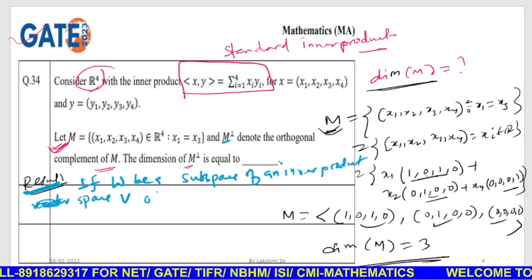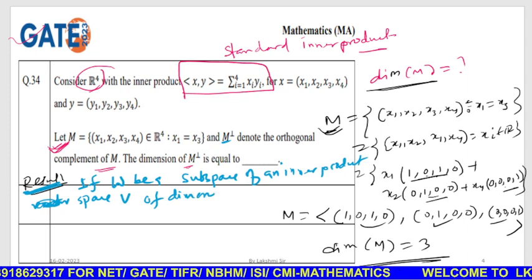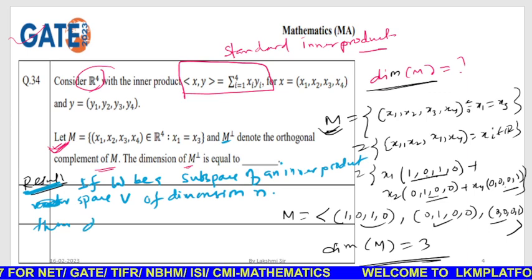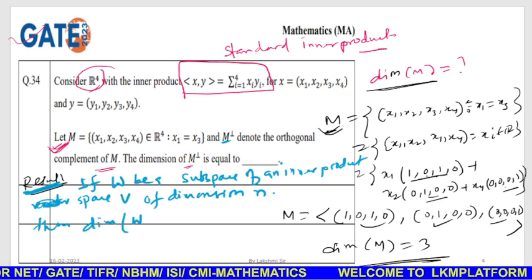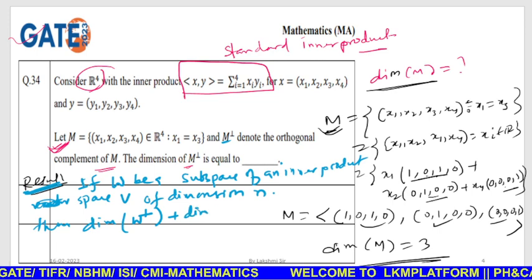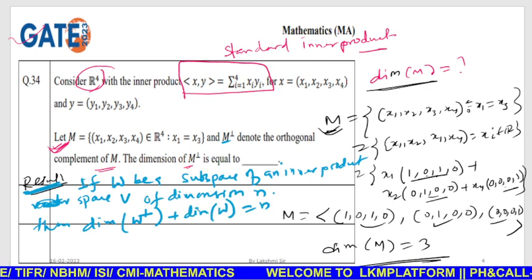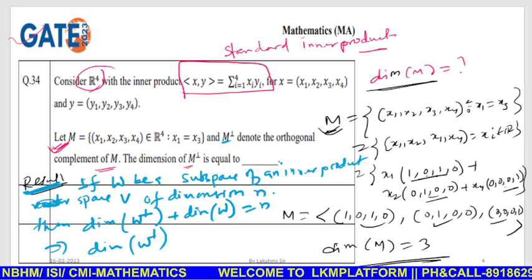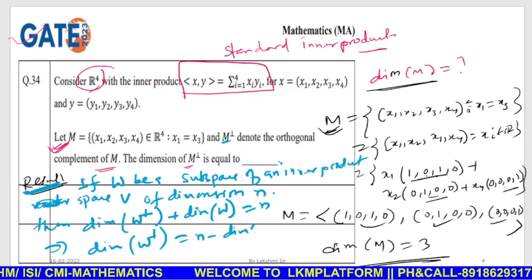Of dimension n. Then dimension of W plus dimension of W perpendicular equals n. It implies dimension of W perpendicular equals n minus dimension of W.